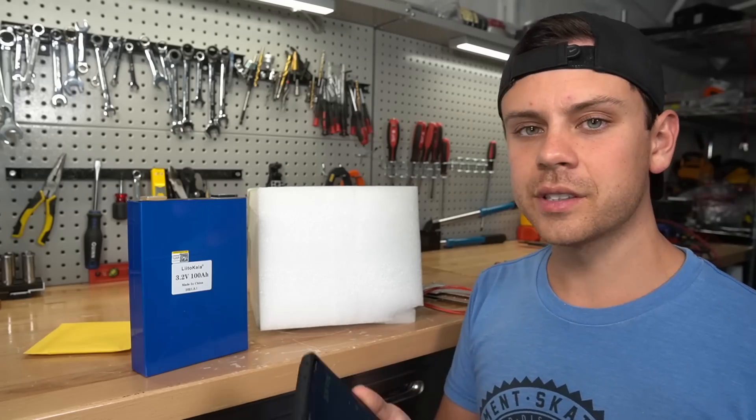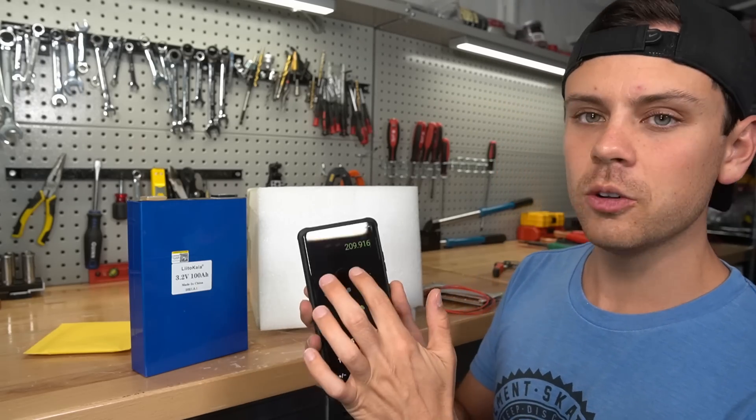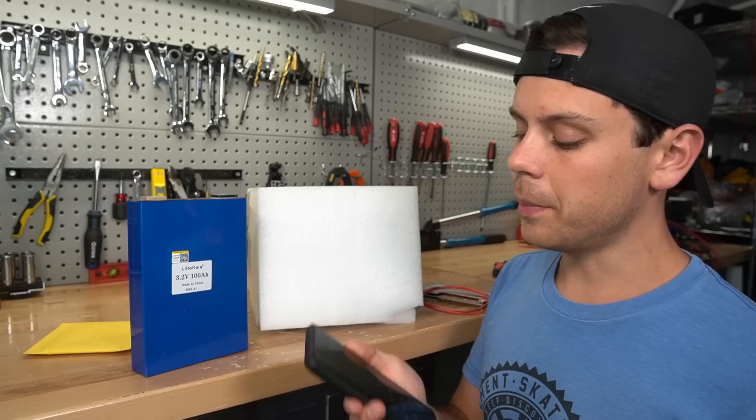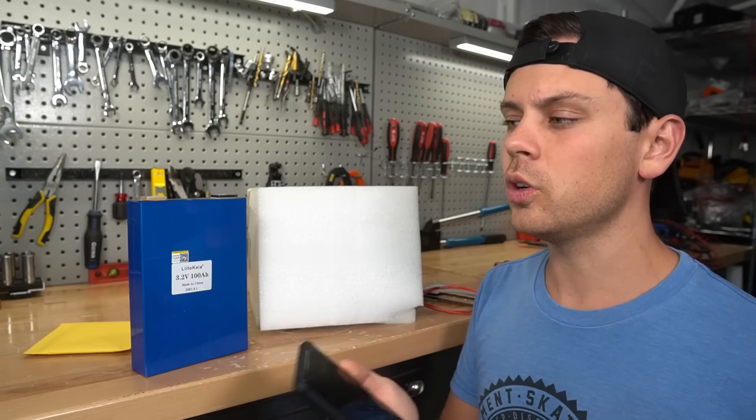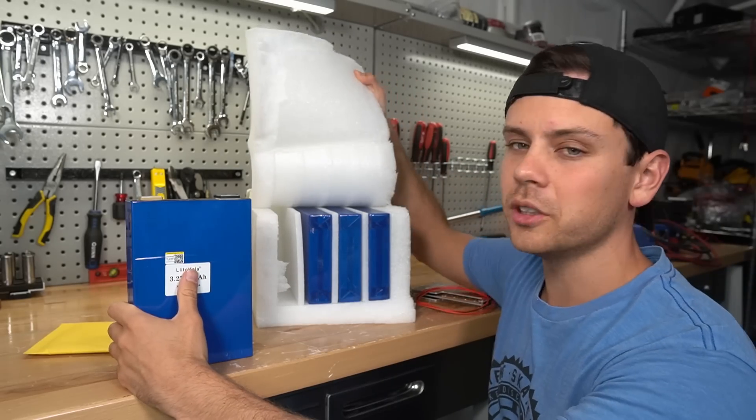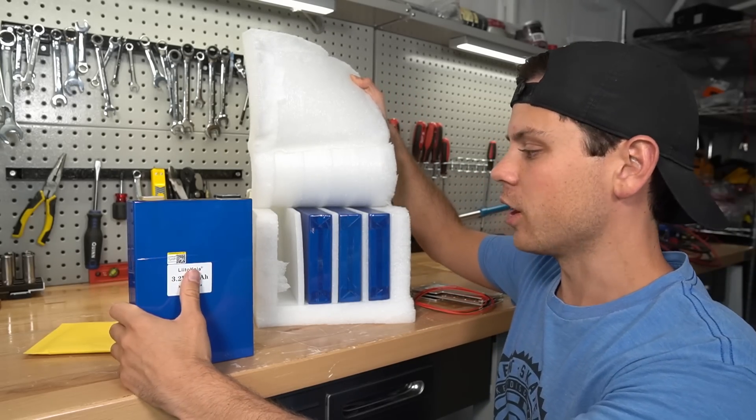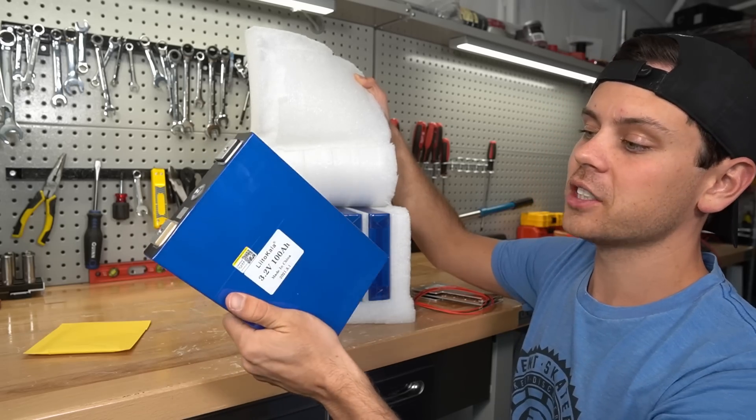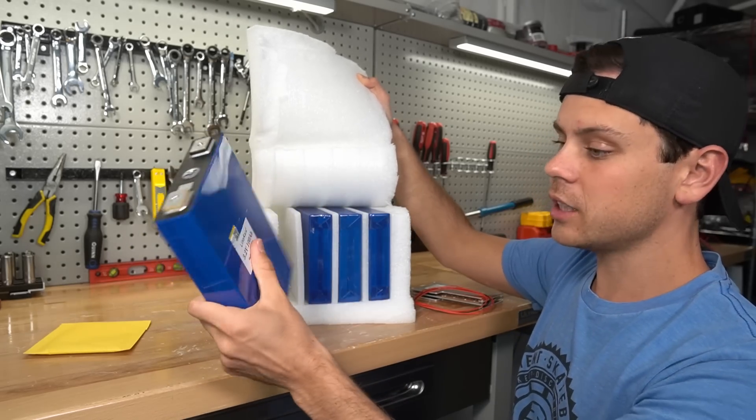Actually the EVE cells are slightly cheaper. I'm getting $209 for this capacity with the BMS. But depending on which BMS you choose will change the price of these packs. If these pull full capacity and we can build a 100 amp hour battery for under 250 bucks, this is going to open up lithium iron phosphate to a lot of people.